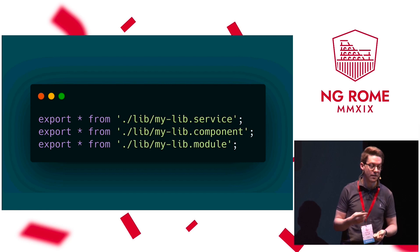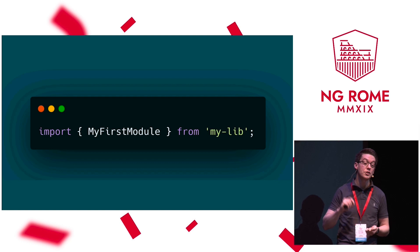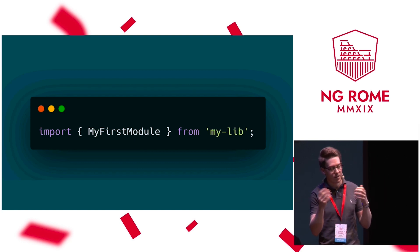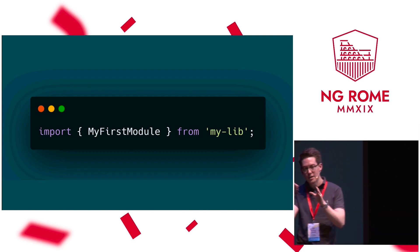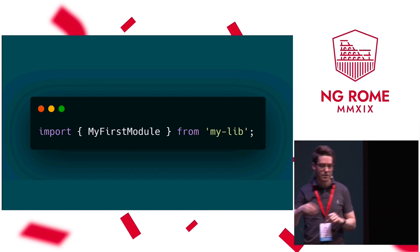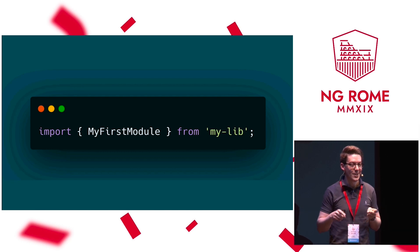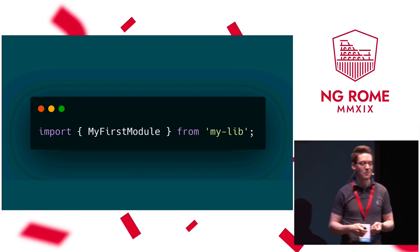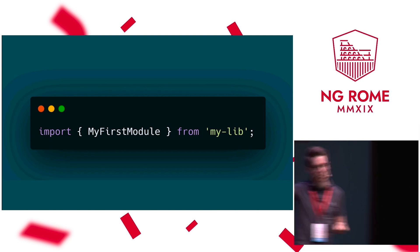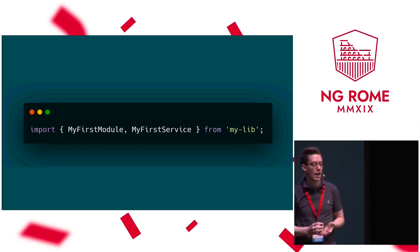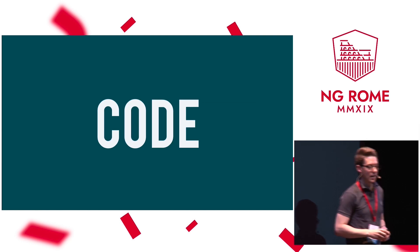Another advantage of the public API file besides abstraction is that it gives you nice and clean imports from the consumer side. We import 'my-first-module' from 'my-lib' — we never import from 'my-lib/src/lib' or deep paths. Visual Studio Code sometimes tries to fool you with deep imports, but basically we just import from the library name, which refers to the public API, which then refers to your files. You can of course add multiple services, modules, or whatever you like.